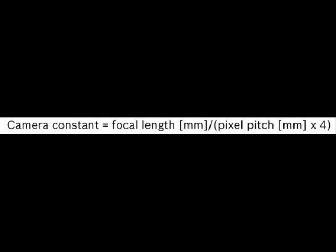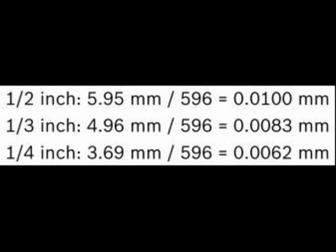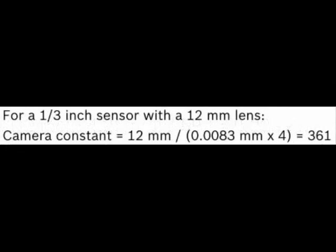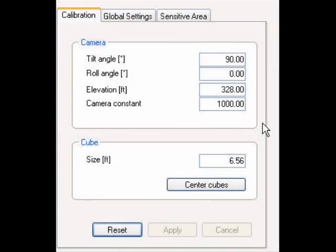Focal length is a very obtainable number — if you have a 6mm lens, it is 6mm. Pixel pitch is obtained by dividing the image sensor size by the number of pixels. For this example, we are using a 596 pixel sensor. Using the chart of standard sensor sizes — ½ inch, ¼ inch — it gives the width in millimeters of the actual sensor. For this practice equation, we are using the ¼ inch sensor, so 4.96mm divided by 596 gives us 0.0083mm. Our Camera Constant is therefore a 12mm lens divided by 0.0083mm times 4, giving us a camera constant of 361, which we manually enter in the camera constant field.